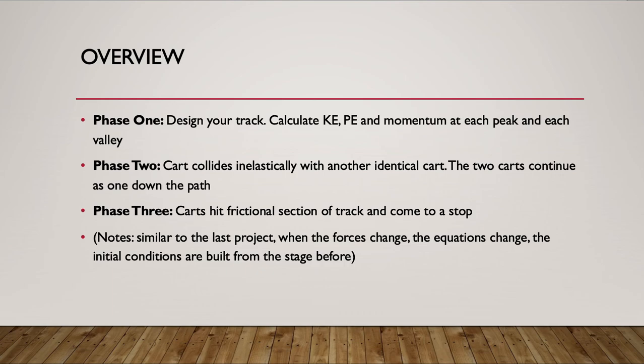At the end of the peak and valley section, you'll have a flat section where your cart is going to collide with another identical cart — it's an inelastic collision. Once they collide they continue down the path into phase three, which is a frictional section of the track that causes them to stop. The forces change at each phase boundary, which is why we divide this into three phases, and the final velocity of each phase becomes the initial velocity for the next.